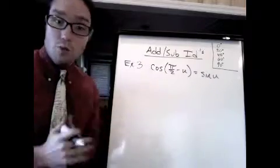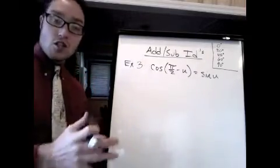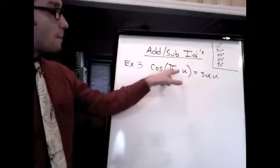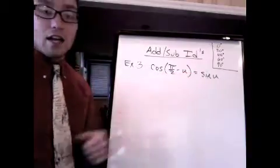All right, here's my last example. I'm going to do a proof. They want me to use addition and subtraction identities to prove that the cosine of pi over 2 minus u is equal to sine u.